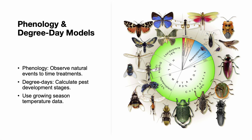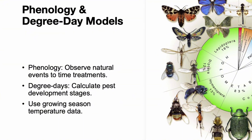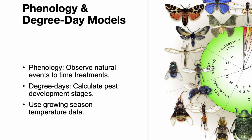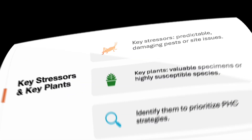We use phenology to match pest activity with observable plant events like bloom or leaf-out. Degree day models help us predict pest development stages using temperature data. This allows us to time treatments more precisely, improving effectiveness and reducing waste. Key stressors are pests or site issues that predictably cause serious problems. Key plants are either highly valuable or especially susceptible to those stressors. By identifying these, we can prioritize our monitoring and management efforts where they'll have the greatest impact.